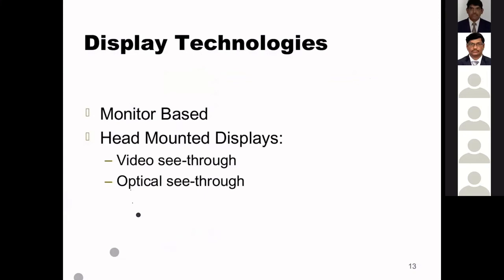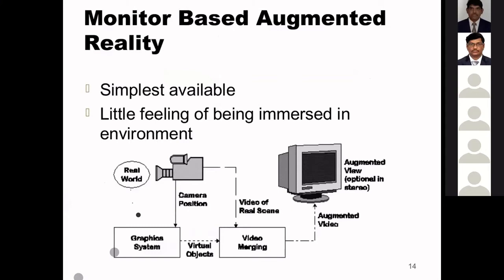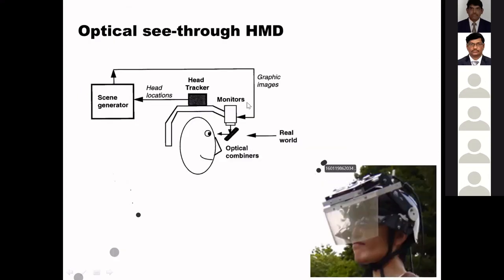There are two main display technologies: monitor-based and head-mounted displays. The monitor-based approach is the simplest available but offers little feeling of immersion. In monitor-based AR, the real world is captured by a camera; virtual objects and real video are merged and displayed on a monitor. In optical see-through HMD, graphic images are generated and the display merges them with the real world view for the user.